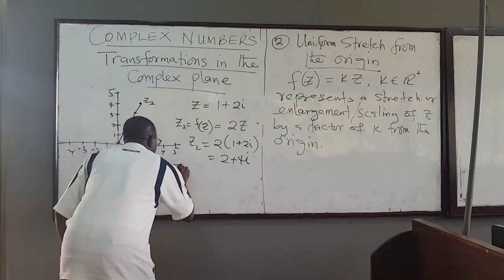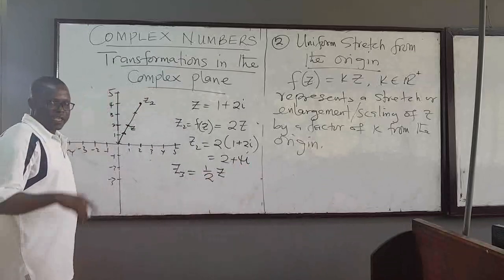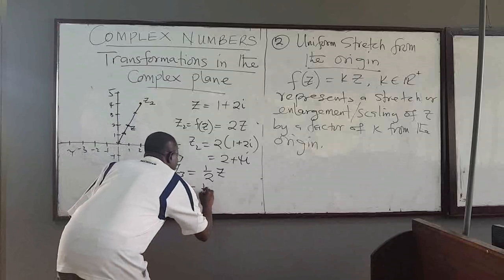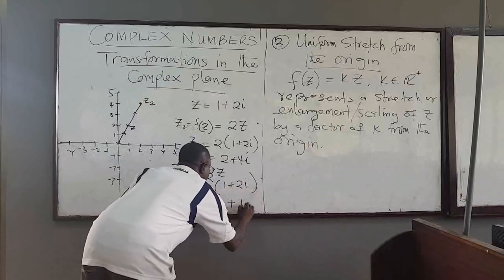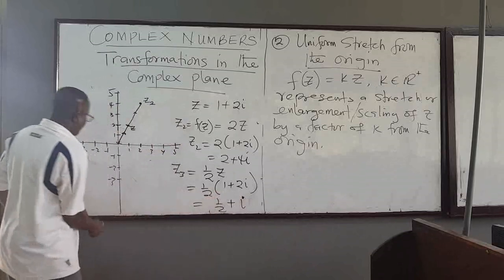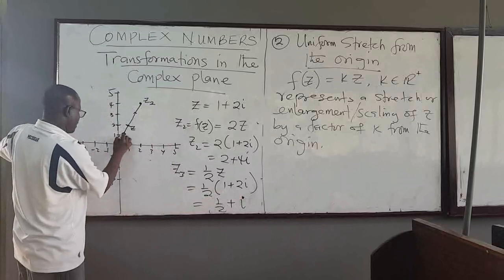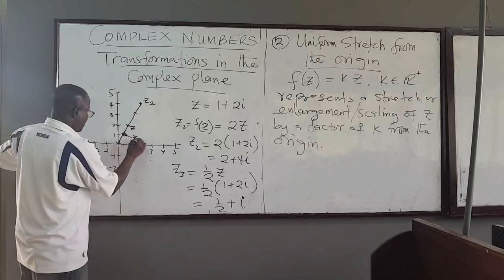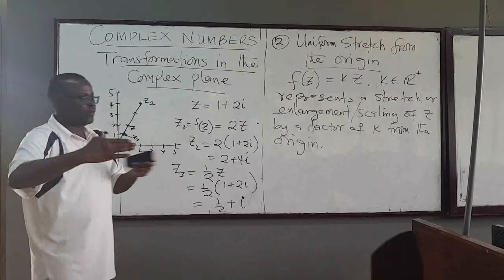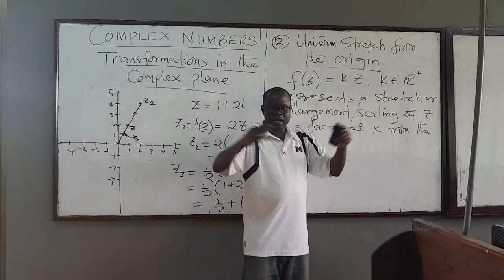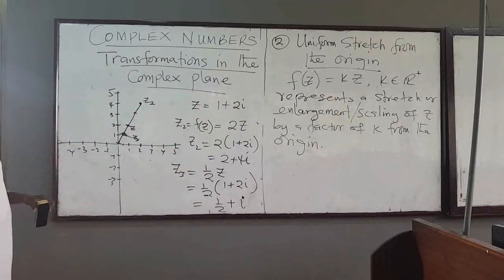Note that if I had a z3 equal to one half of z — so half of (1 plus 2i) — this gives one half plus i. So z3 would be the point (½, 1). You see that z3 is half of z. So you are scaling the point by a constant — either increasing or decreasing your vector. That is uniform stretching.